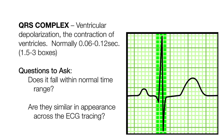Next, look at the QRS complex — this is ventricular depolarization, or the contraction of ventricles. It is normally 0.06 to 0.12 seconds, or 1.5 to 3 boxes. Ask yourself: does it fall within the normal time range? And are they similar in appearance across the EKG tracing?